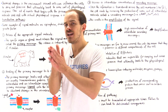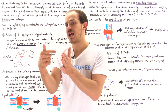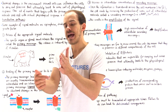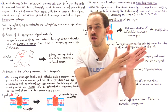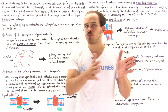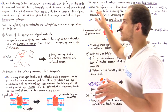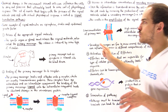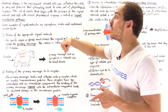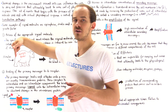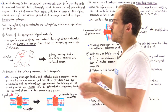Beginning with that signal molecule that increases in concentration around a cell, and ending with that physiological response — all the events that take place between these two points in time — this is what we call a signal transduction pathway. Transduction simply means we're passing that signal from one area to another, and we'll see exactly what that means in just a moment.